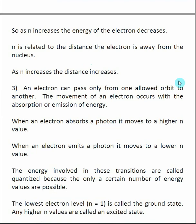Electrons can move between these different stationary states — for example, from n=1 to n=4, or n=4 to n=3. There are different transitions that electrons can make. These transitions, moving from one n value to another, are related to either the absorption or the emission of energy inside our hydrogen atom.